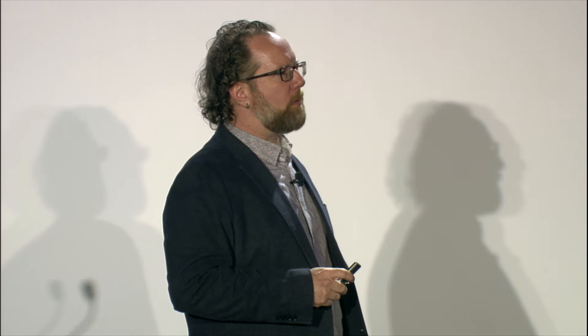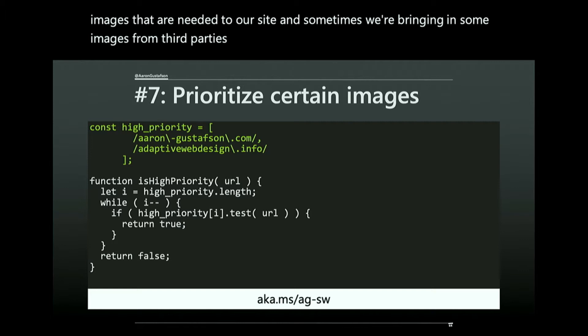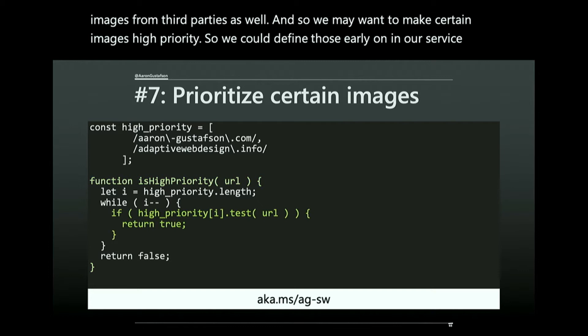We may also want to prioritize certain images, since some are native to our site and others come from third parties. We can define high-priority images early on in the service worker, then have a function to determine whether a particular requested image is high priority, and make decisions about whether to show it or cache it accordingly.